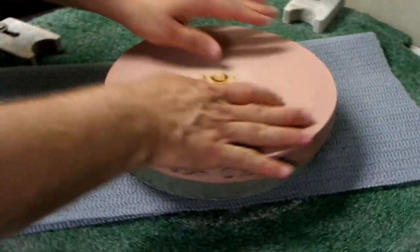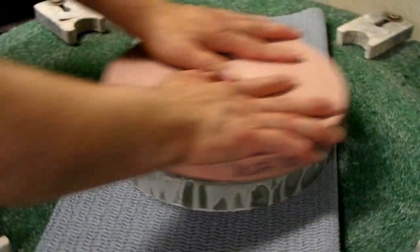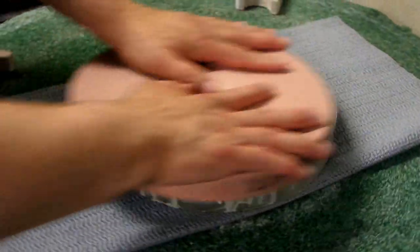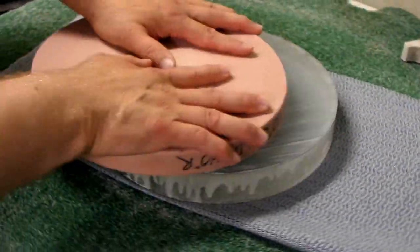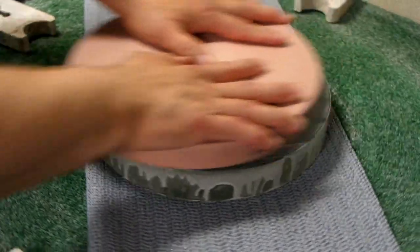I've got a little on there and we're going to do a wet by hand. This mirror blank was pre-generated at Newport Glass and it has a very good curve on it.